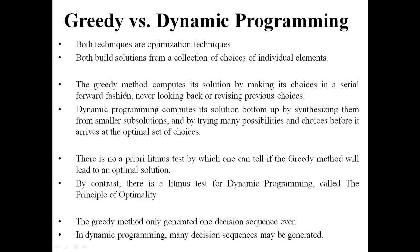The greedy method computes its solution by making choices in a serial forward fashion, never looking back on or revising previous choices. Dynamic programming, in contrast, considers all possibilities and selects the optimum solution from among them.